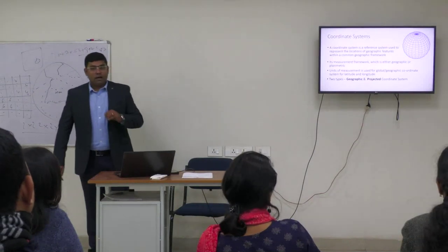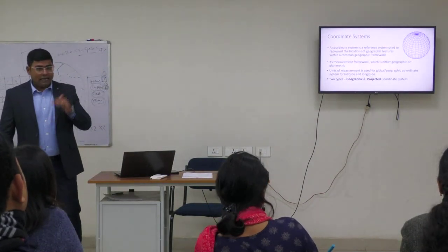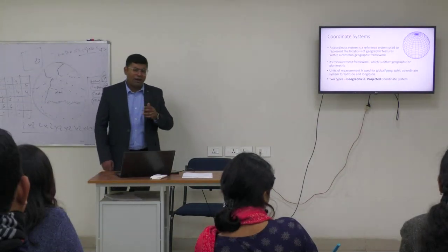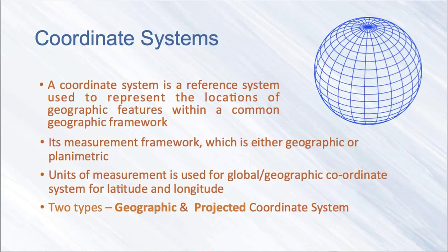After shape and size, the next concept to understand is the coordinate system. We are all familiar with it. A coordinate system is a reference used for representing the location of geographic features. There are two types of coordinate systems: geographic and projected coordinate systems.